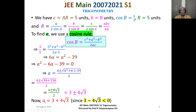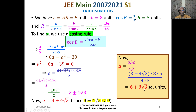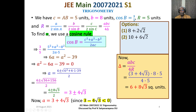Now we know side a, side b, side c, and capital R. Using the formula R equals abc divided by 4 delta, we get delta equals abc divided by 4R. Substituting: a is 3 plus 4 root 3, b is 8, c is 5, and 4R is 4 times 5 equals 20. The 5s cancel, giving delta equals 2 times (3 plus 4 root 3), which equals 6 plus 8 root 3 square units.